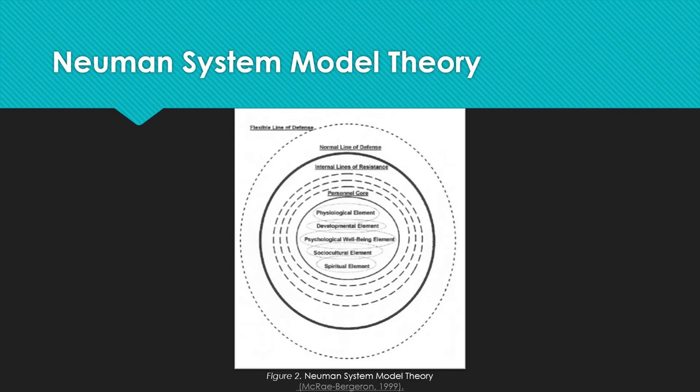According to an article written by Oluwakir and Okunlawan from 2015, in the Newman System Model Theory, the client is the patient, family, or community that the nurse is working with. There are five variables that contribute to the client's core structure of survival factors, and they are physiological, developmental, psychological, sociocultural, and spiritual.